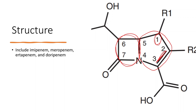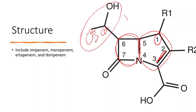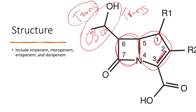They also have a side chain — a hydroxy ethyl side chain. There is a carbon and hydrogen here, and a CH3 group, so this hydroxy ethyl side chain is in the trans configuration, not the cis configuration. Because of this trans configuration, carbapenems are resistant to most beta-lactamases — not all, but most — which is how they resist a lot of beta-lactamases.